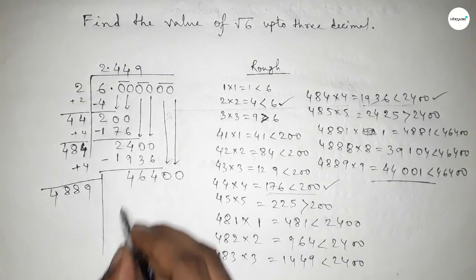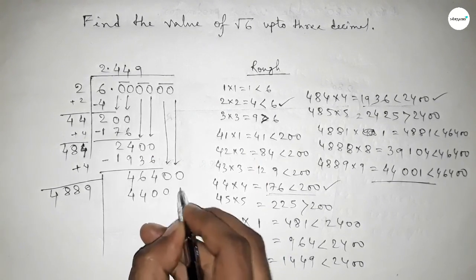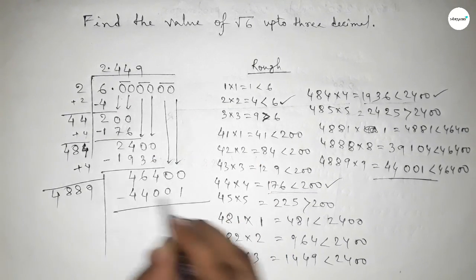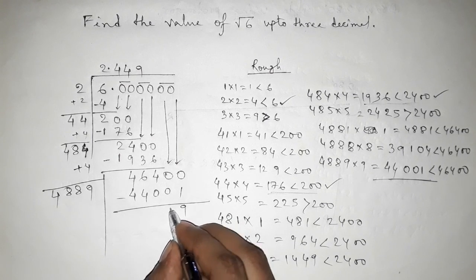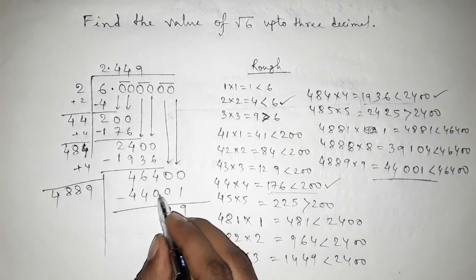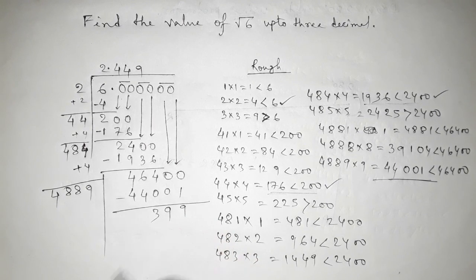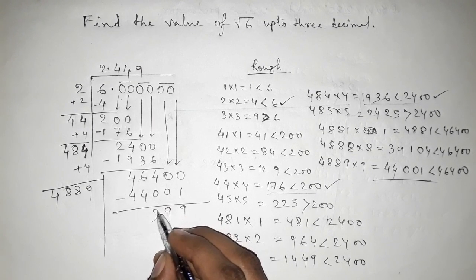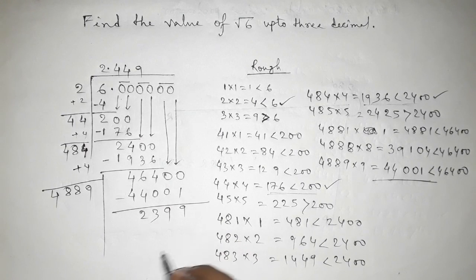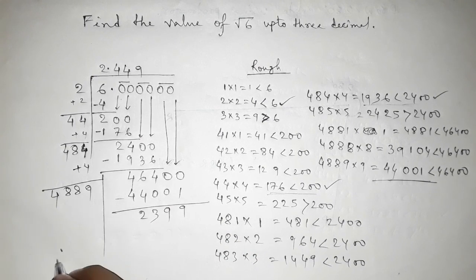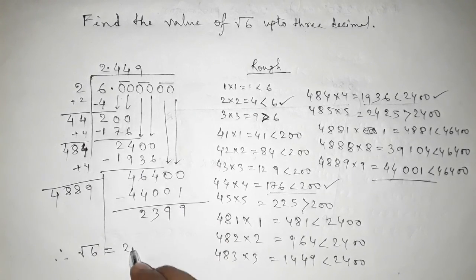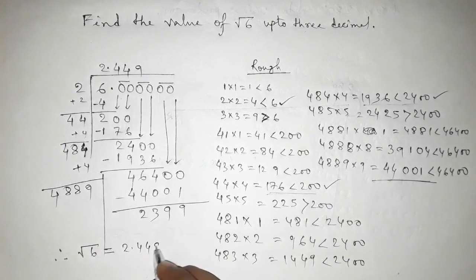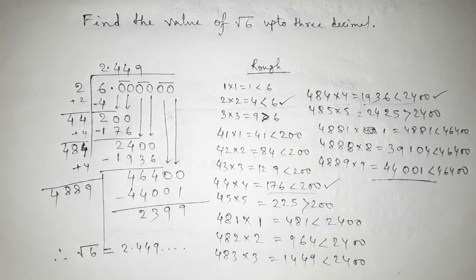So putting the product here — this is 9. If you continue further, but here we have to find out up to 3 decimal places. So root 6 is equal to 2.449. That's all, thanks for watching.